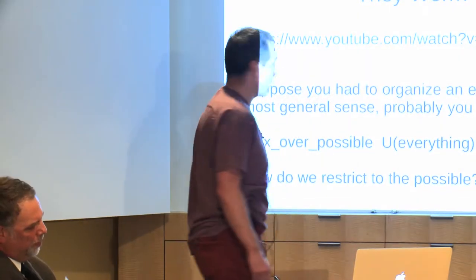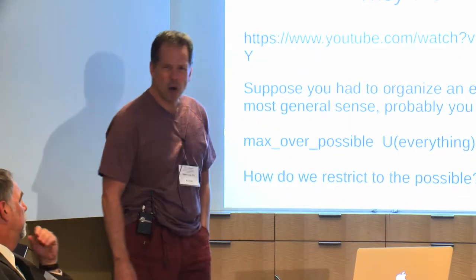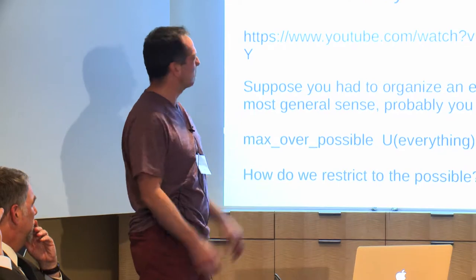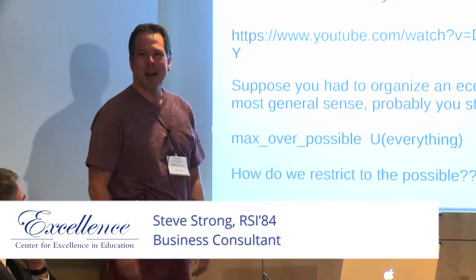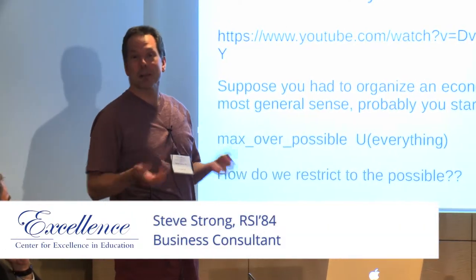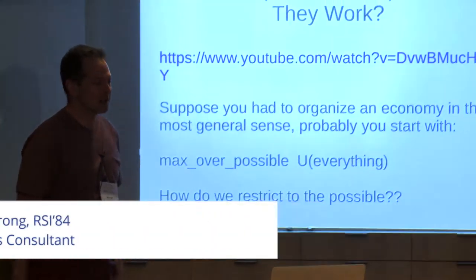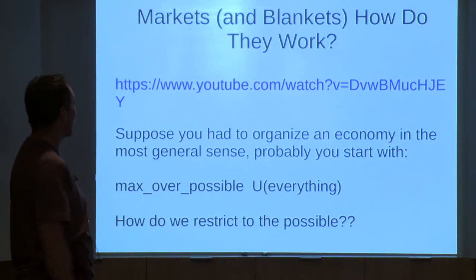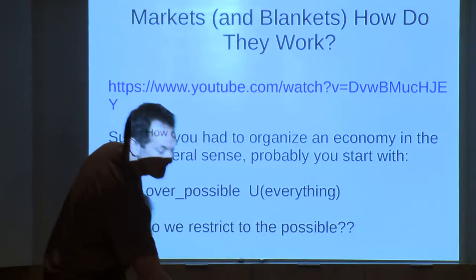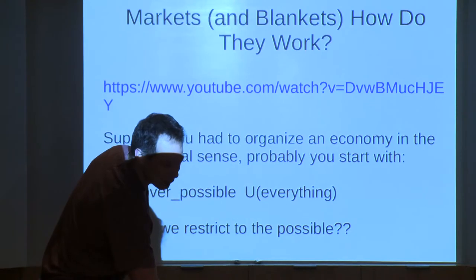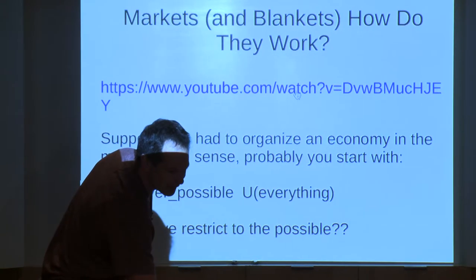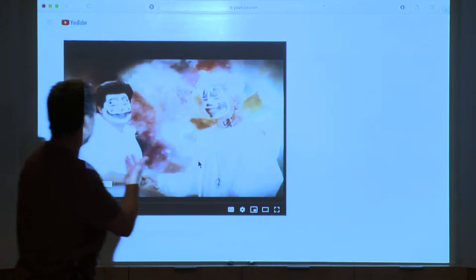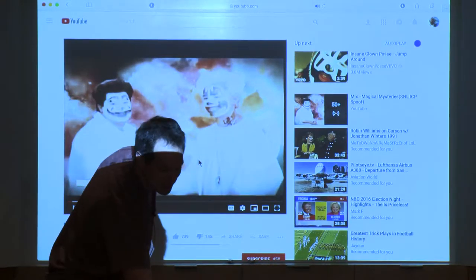I'm going to talk about something I hope is interesting — maybe everybody knows this and it's trivial, but I don't think everybody knows it — about where financial markets come from, why they exist. The title is 'Markets and Blankets, How Do They Work?', which is a reference to a great Saturday Night Live number where they made fun of this Insane Clown Posse song.